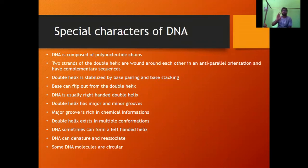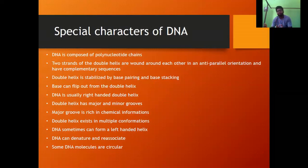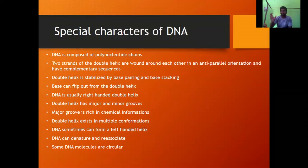The direction of DNA can be determined by the pentose sugar: if the oxygen bond is pointing upward, the DNA strand runs upward; if downward, it runs downward. The double helix is stabilized by base pairing and base stacking. DNA is usually a right-handed double helix, but Z-DNA is left-handed. The double helix has major and minor grooves. Some DNA molecules are circular, such as plasmids found in bacteria.